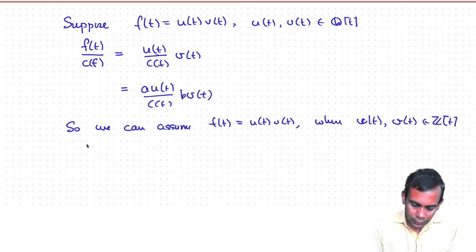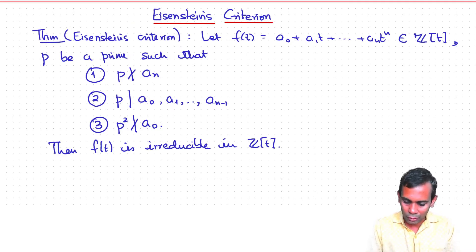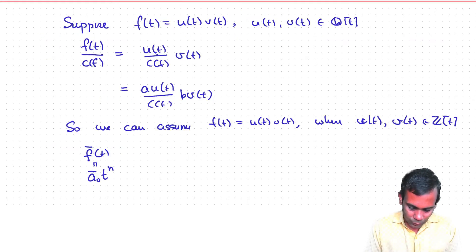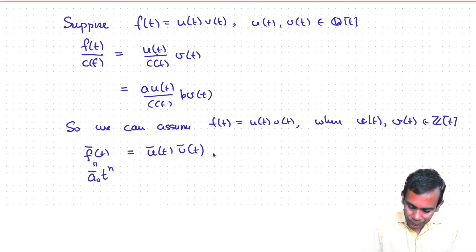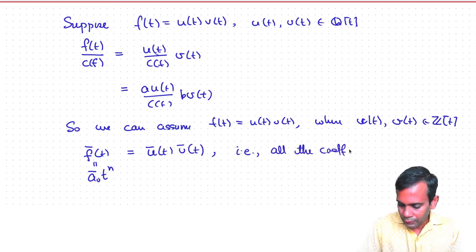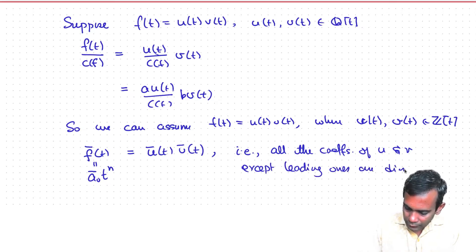Now consider f̄(t), the reduction of f modulo p. Because of our hypotheses on f, all coefficients except the leading term are divisible by p, so f̄(t) = āₙ·tⁿ. This equals ū(t)·v̄(t), which means all but the leading coefficients of u and v are divisible by p.